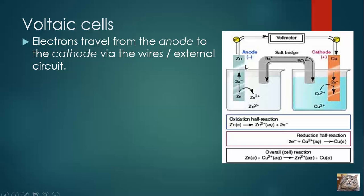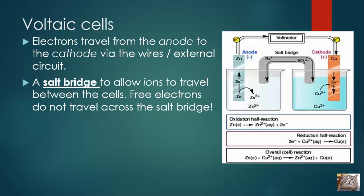So in the setup of this cell, we have zinc and zinc ions, and we have copper and Cu²⁺ ions. The zinc is changing into Zn²⁺, losing two electrons. The electrons travel across the wire, and you can do stuff with these electrons here — there's just a voltmeter there, but you could, in theory, power a light bulb or something like that. To complete the circuit, what allows this is something called the salt bridge. The salt bridge allows ions to pass back and forth. Electrons do not travel across this salt bridge — it's these ions that actually carry the charge across and complete the circuit.